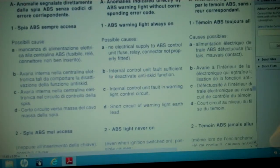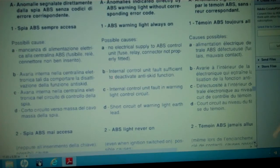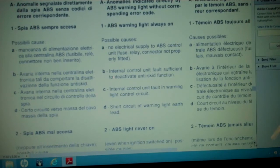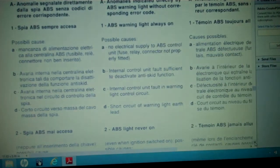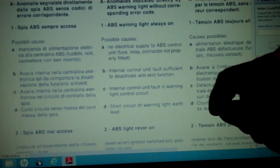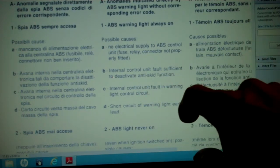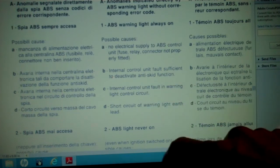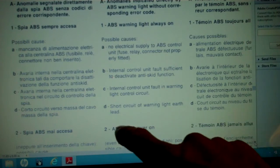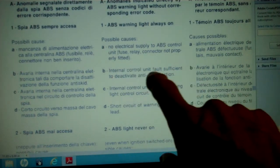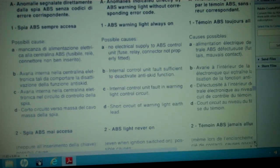Now in the workshop manual, in the brake section, they go through the various ABS warning light problems. If you have a blinking warning light, you can pull an error code off and try and track that down. Mine comes under the heading of ABS warning light was always on. They list the causes: the electrical supply to the ABS control unit not working, internal control unit fault sufficient to deactivate the ABS skid function, internal control unit fault warning light control circuit, or a short circuit of warning light earth lead. They talk about fuses, relays, connectors not properly fitted. So that's a pretty broad list of problems.